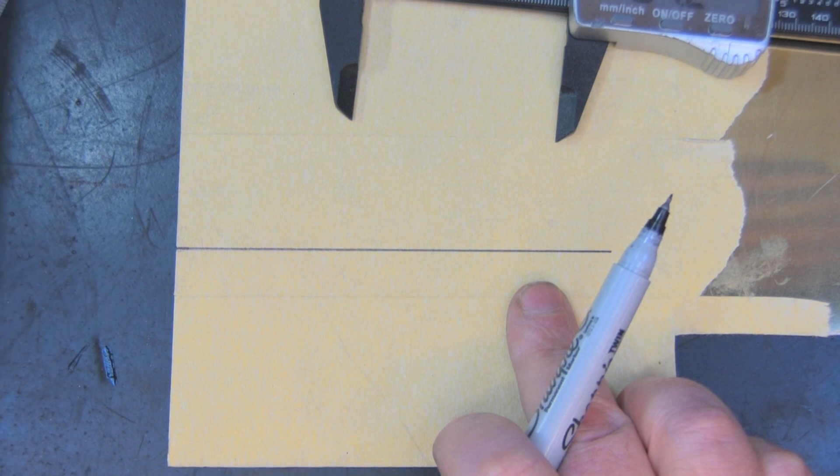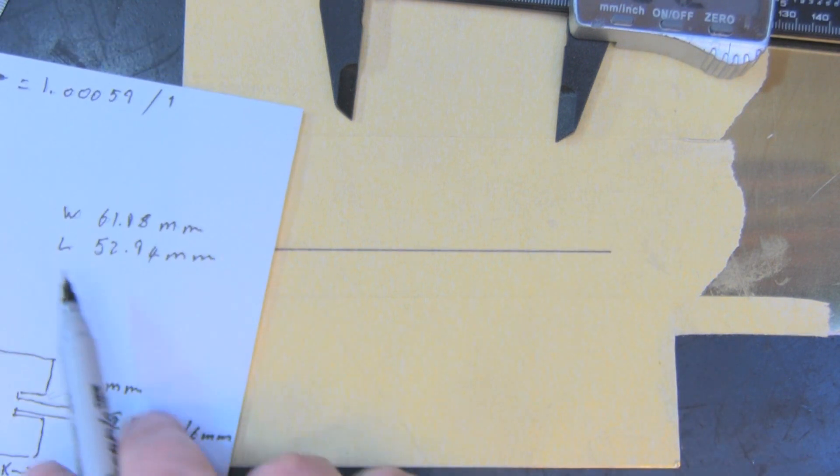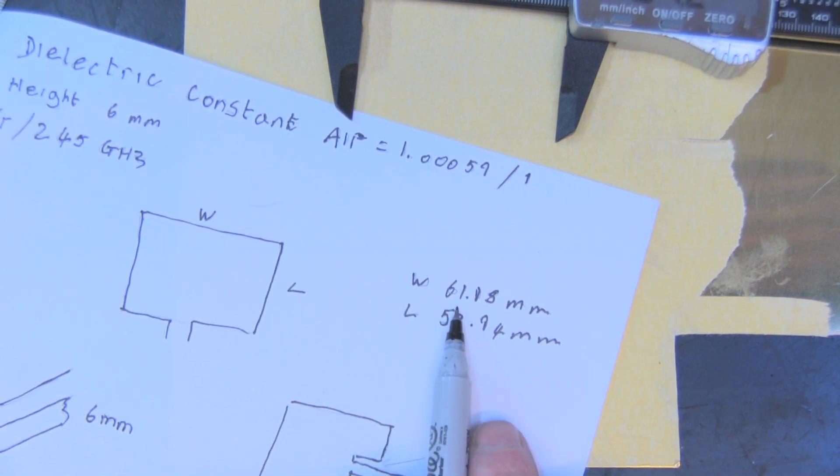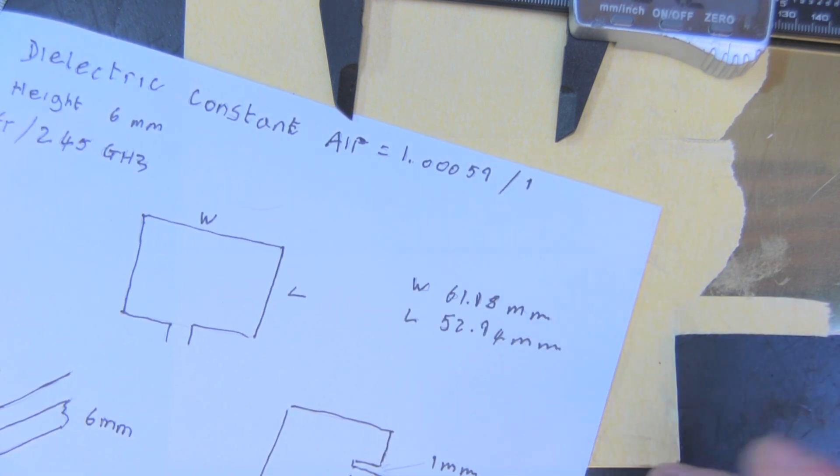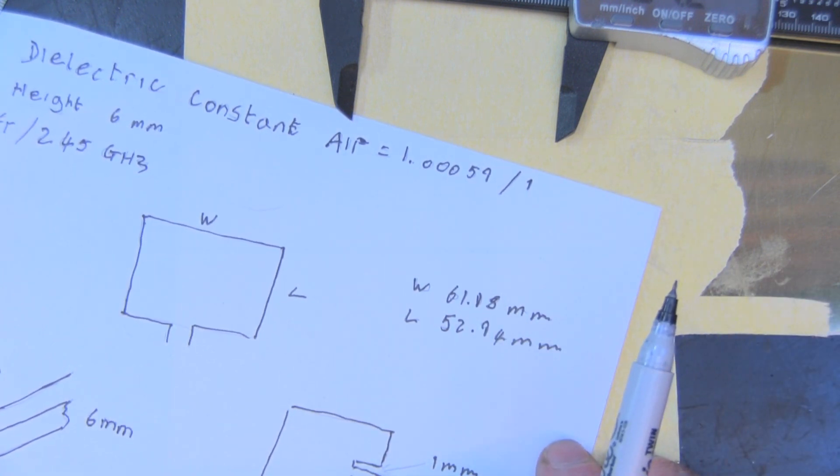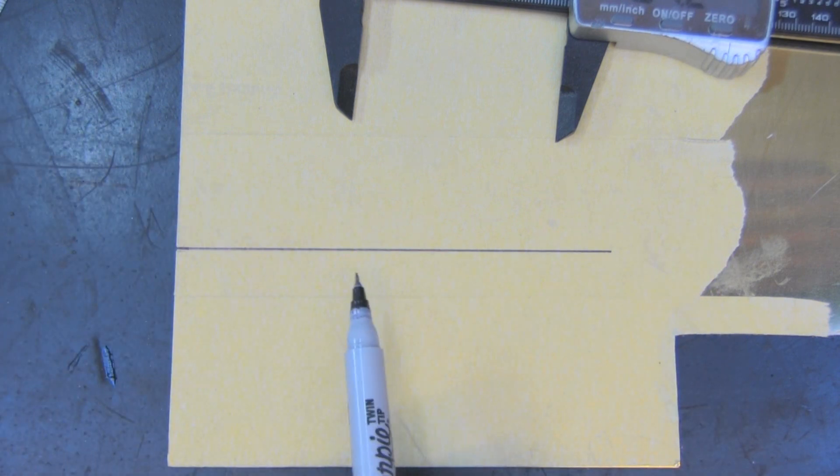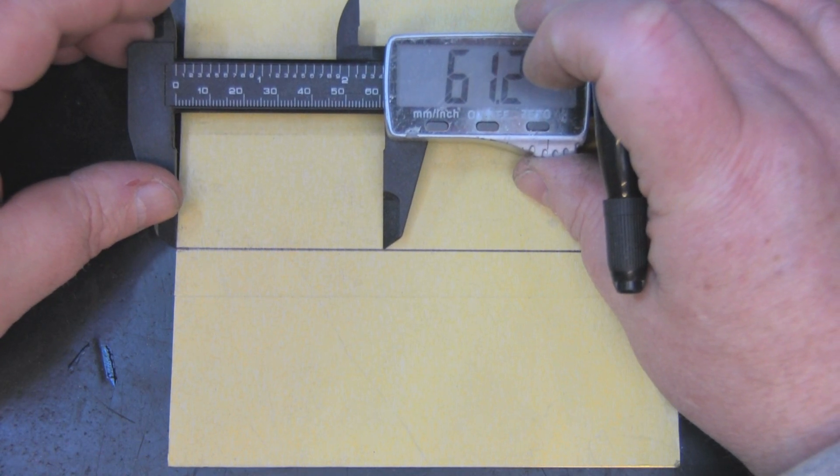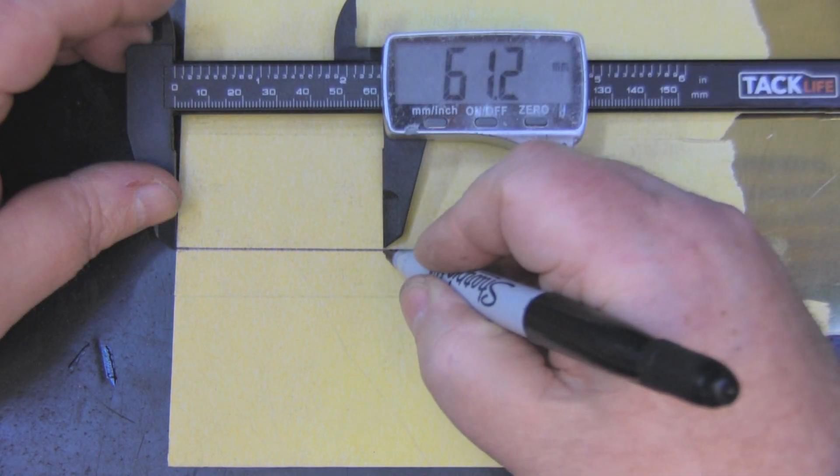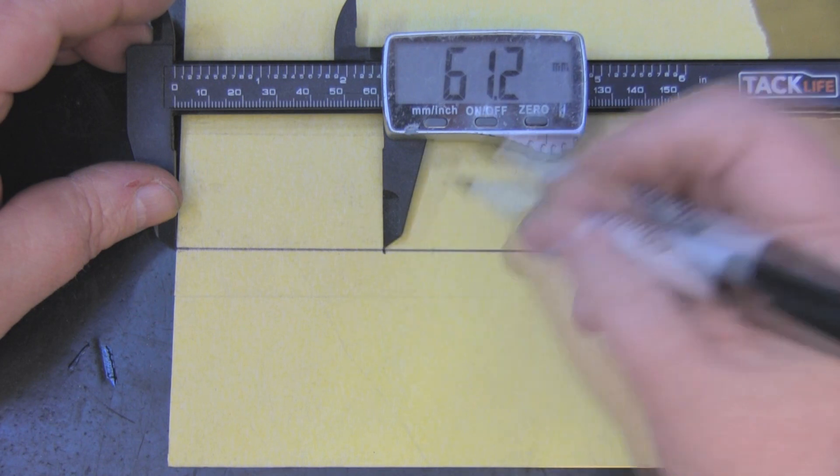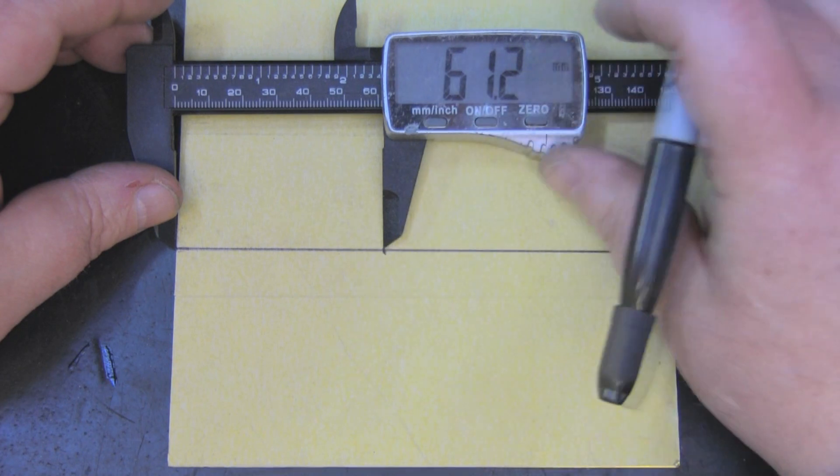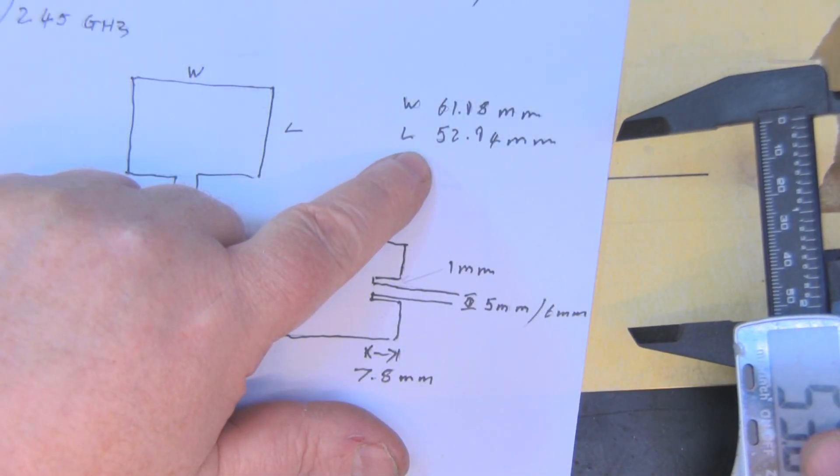Now that I've got my length line drawn, I need to complete this by measuring the width. The width according to measurements is 61.18 millimeters - I'm rounding that up to 61.2 millimeters. I'll measure in from the side here 61.2 millimeters, put a little mark, then draw a line with my set square. If you're out by 0.5 of a millimeter with an antenna like this, you don't have to worry too much.